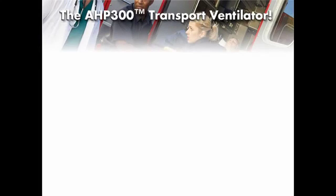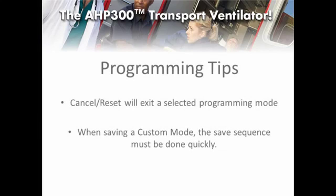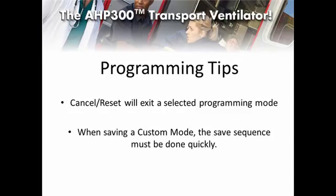Custom modes 2 and 3 can be programmed using the same process used for custom mode 1. Here are some final tips: at any time during a programming sequence, pressing the cancel/reset button will exit you from that programming mode without saving your settings. Therefore, if you get an alarm during programming, it's best to allow it to occur and save your program before cancelling the alarm. On the custom modes in particular, the save sequence must be done within 2 seconds, or else it will exit out of programming mode without saving. Be ready to press and hold the custom mode select button and then immediately press the mode selection button to ensure your settings are saved.